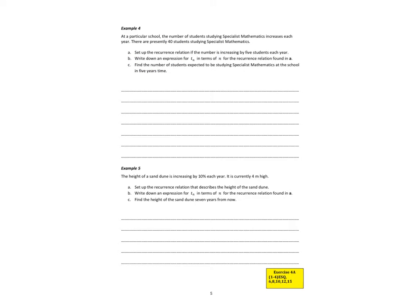The number of students studying specialist maths increases each year. There are presently 40 students studying specialist maths, so let's put T1 = 40. Set up a recurrence relationship if it's increasing by 5 students each year. So Tn = T(n-1) + 5. There's my recurrence relationship. They write down the expression for Tn in terms of n only.